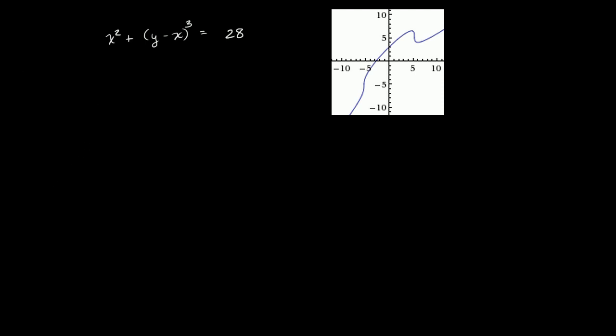So what I want to do is figure out the slope at x is equal to 1. And you can imagine, once we implicitly take the derivative of this, we're going to have that as a function of x and y. So it'll be useful to know what y value we get to when our x is equal to 1. So let's figure that out right now.